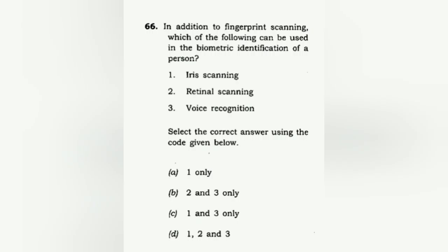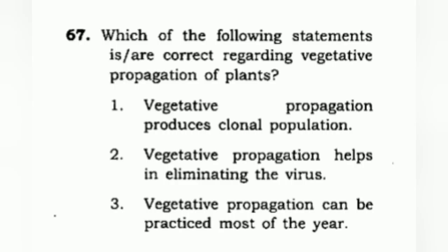In addition to fingerprint scanning, which of the following can be used in biometric identification of a person? This technology has now been implemented widely, though it started with elite use. The options include iris scanning, retinal scanning, and voice recognition. The correct answer is D: 1, 2, and 3 — all three are correct.